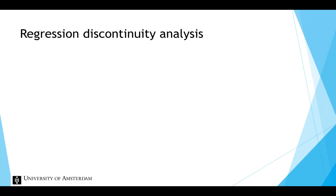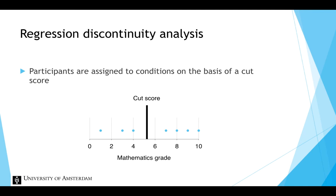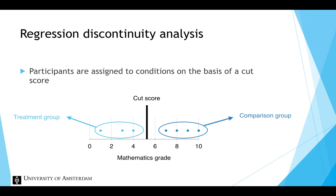So instead of random assignment, participants are assigned to conditions on the basis of a cut score — the threshold. For example, children could be assigned to an intervention based on their mathematics grade. Each dot represents a child's math grade. The cut score is 5. Children below the cut score will be assigned to the treatment group, containing a mathematics intervention, and children above the cut score will be assigned to the comparison group, in which there is no intervention.